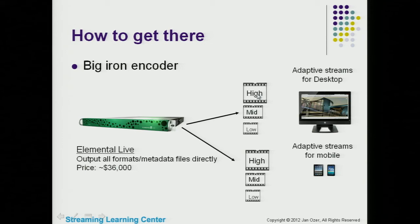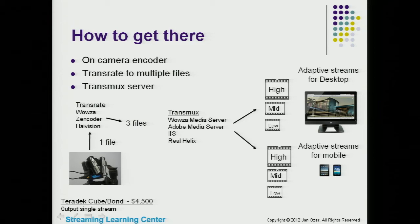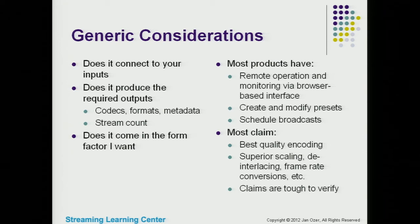Does it produce the required outputs? This is complicated. You need to know what your distribution schema is going to look like before you can buy an encoding tool — it could need to supply everything, or you might send one file through transrating to transmux for different formats. If you've got a Wowza media server, you don't need the metadata files or chunked content files. You need to know how that schema works before you buy.